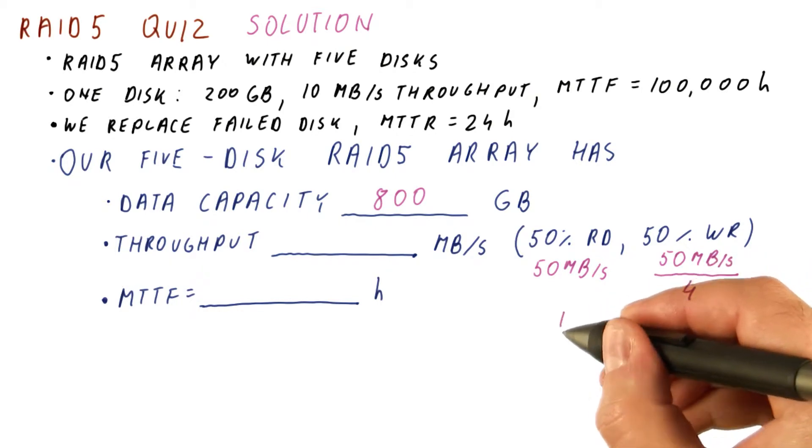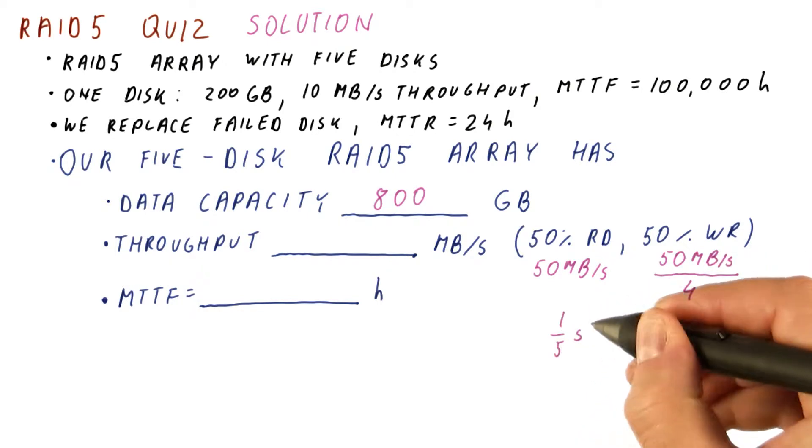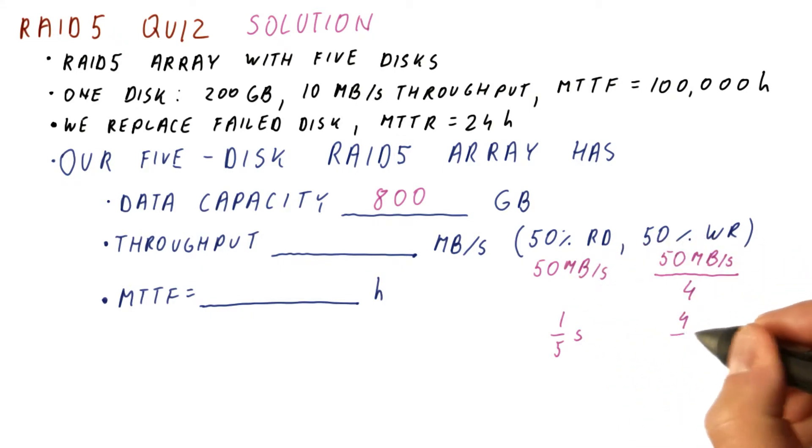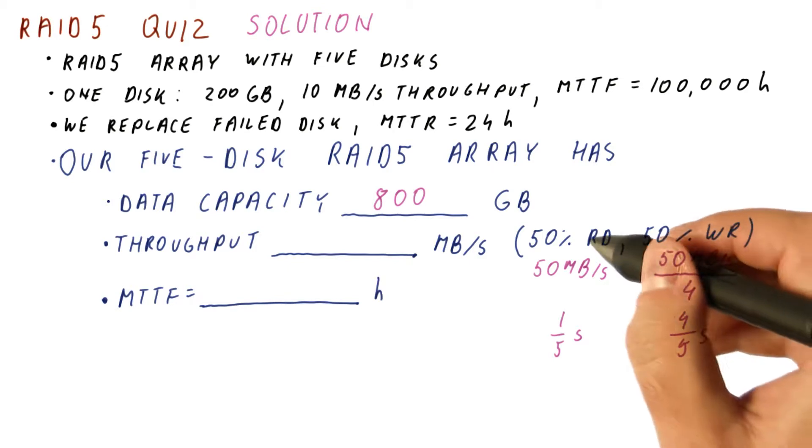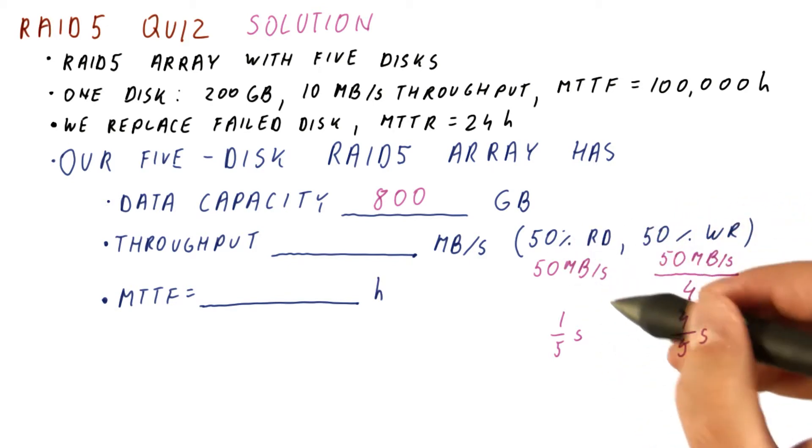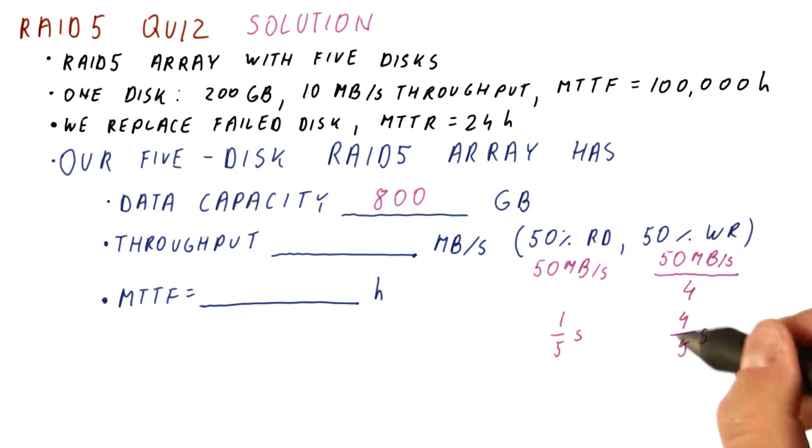Just like before, that means that for one-fifth of a second, we will be doing what reads need to do. And for four-fifths of a second, we will be doing what writes need to do in order to achieve the same number of reads and writes, because reads take a quarter of the time that writes do.